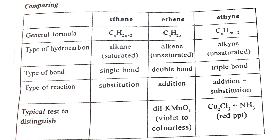For alkynes, which have a triple bond, they also react with the bromine solution and decolorize it. So alkenes and alkynes both decolorize bromine solution, while alkanes with only single bonds show no reaction and do not decolorize it.